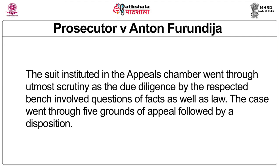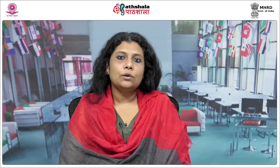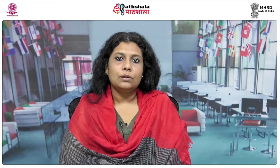This case went through five grounds of appeal followed by a disposition. The grounds of appeal included allegations that Furundzija was denied a fair trial, that the conviction lacked concrete evidence, that one of the judges fulfilled grounds for disqualification, and that the sentence imposed was excessive. The relief sought by Furundzija was acquittal or authorization of a new trial and reduction of the sentence to a term of six years.